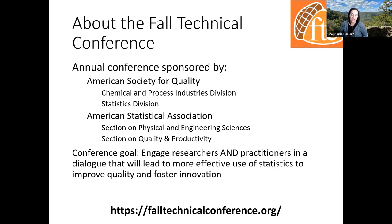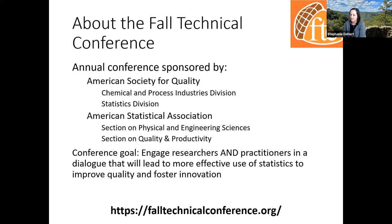Two divisions or sections of each organization are involved. From ASQ, we have representatives from the Chemical and Process Industries Division and the Statistics Division. From ASA, we have the section on Physical and Engineering Sciences and the section on Quality and Productivity. The goal of the conference is to engage researchers and practitioners in an open dialogue to more effectively use statistics to improve quality and innovation. For more information, please visit falltechnicalconference.org.